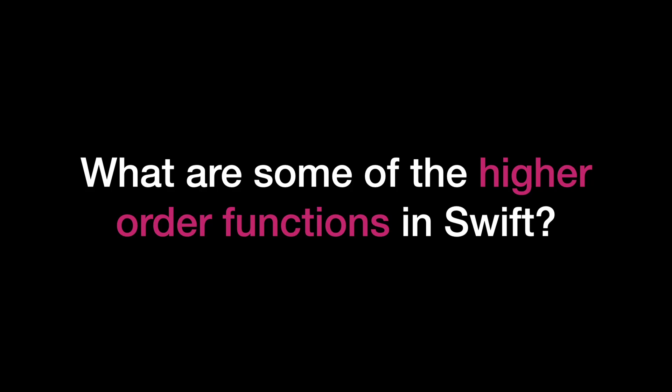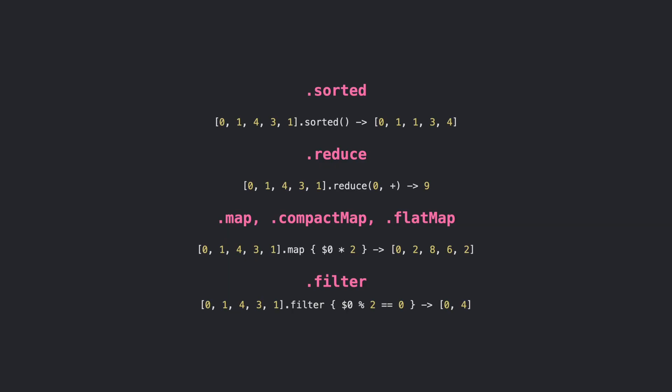First, what are some of the higher order functions in Swift? A higher order function is a function that takes in one or more functions as arguments or returns a function as its result. If you saw my previous video on functional programming I go way more in depth, but map, reduce, filter and so on are all considered higher order functions. In the closure we are effectively passing in a function for them to use.